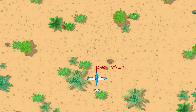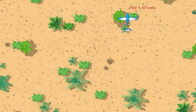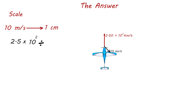A novice pilot sets a plane's controls thinking the plane will fly at 2.50 × 10² kilometers per hour to the north. If the wind blows at 75 kilometers per hour toward the southeast, what is the plane's resultant velocity? Use graphical techniques. To find the resultant velocity, we first adapt a drawing scale. The best scale here is that every 10 kilometers per hour is represented by 1 centimeter. So the plane's velocity of 2.50 × 10² km/h is equivalent to 25 centimeters pointing north.